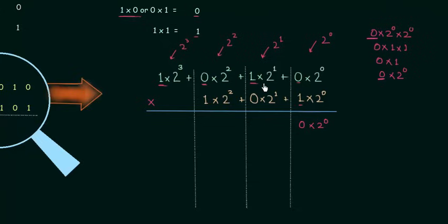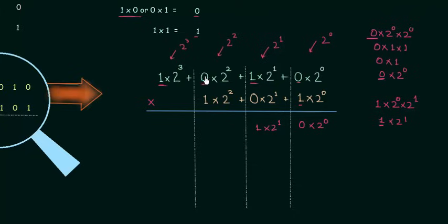When I multiply this 1 by this 1, the result is 1 and the weight is 2 raised to power 1, so this 1 settles in the second column. When I multiply this 1 by 0, the result is 0 and the weight is 2 raised to power 2, so it goes in the third column. Finally, multiplying this 1 by the MSB gives result 1 with weight 2 raised to power 3.